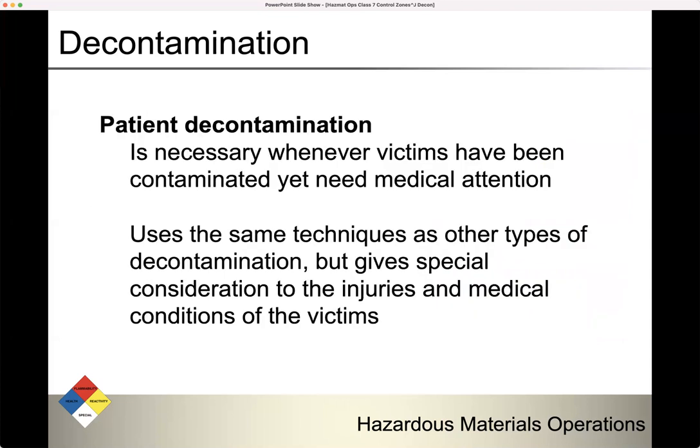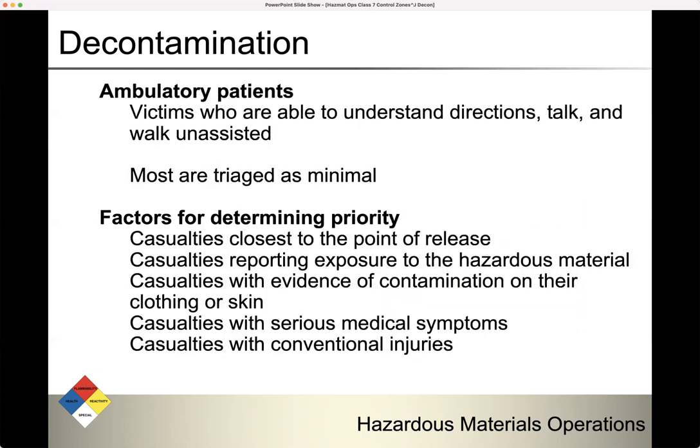Patient decontamination is necessary whenever victims have been contaminated yet need medical attention. If you're contaminated but don't need medical attention, that's just regular decontamination. Use the same techniques as other types, but give special consideration to injuries and medical conditions. Ambulatory patients are victims who are able to understand directions, talk, and walk unassisted — most are triaged as minimal or minor. Priority factors: anyone closest to the point of release, reporting exposure, with evidence of contamination on clothing or skin, or with serious medical symptoms gets higher priority.